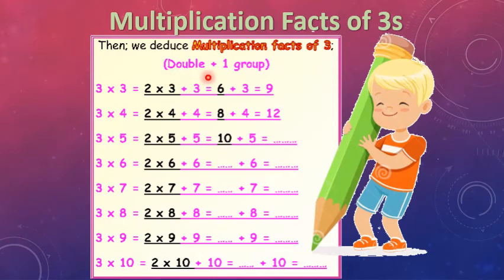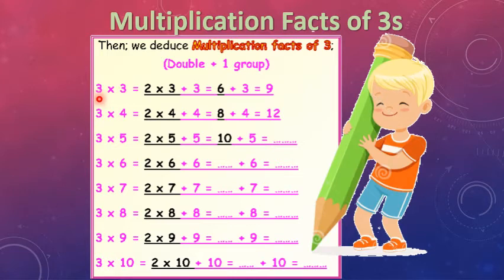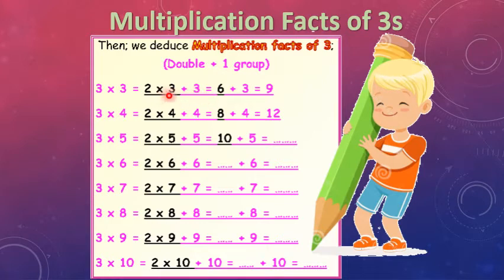Here we have the 'double plus 1 group' strategy. Table 3 — the number after the multiplication sign is the number of elements in the groups. For 3 × 3, it means 3 groups, each group has 3 elements. To find 3 × 3, we use double plus 1 group: 2 × 3 plus 1 group, which is plus 3. 2 × 3 equals 6, plus 3 equals 9.